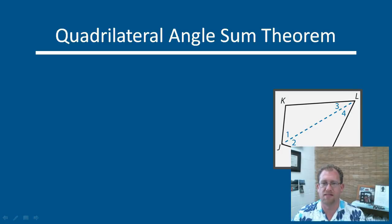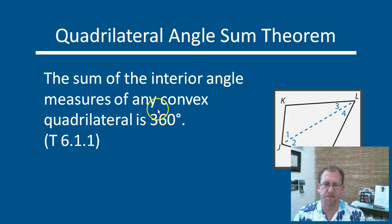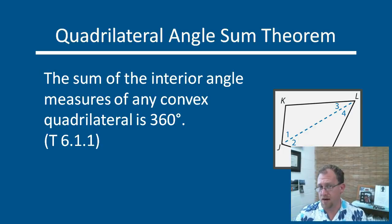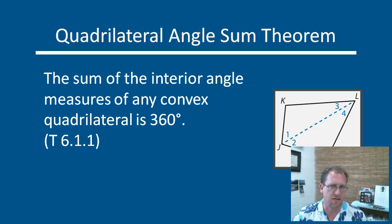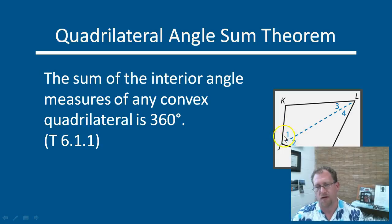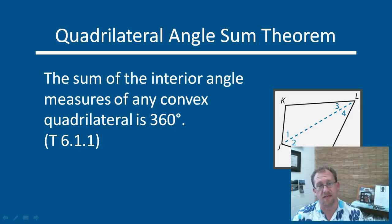The quadrilateral angle sum theorem states that the sum of the interior angle measures of any convex quadrilateral is 360 degrees. That's easy to see: if you take a quadrilateral and draw a diagonal, you've cut it into two triangles. The total interior angles of a triangle are 180 degrees. With two triangles sitting together making a quadrilateral, you have 180 + 180 = 360 degrees. Any four-sided figure cut in half is two triangles, each representing 180 total interior degrees, so any quadrilateral has 360 total interior degrees.